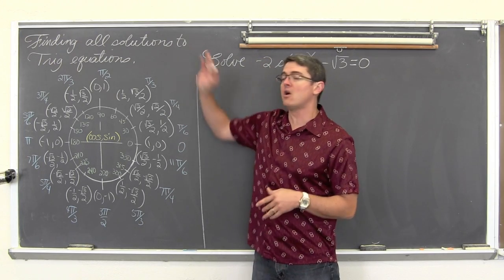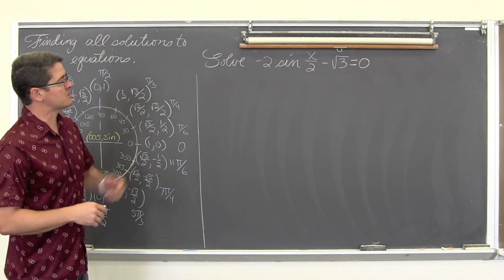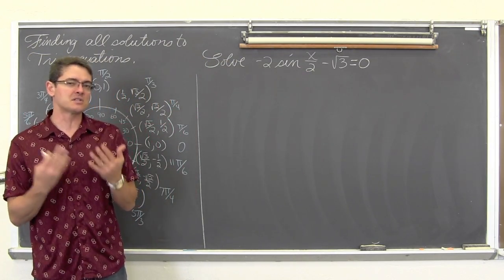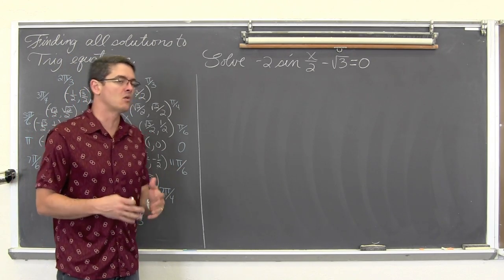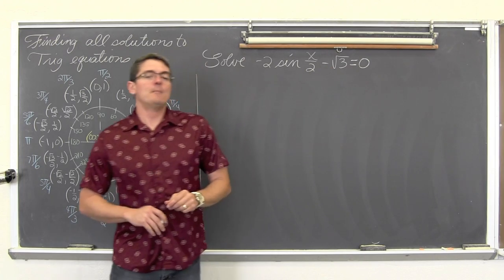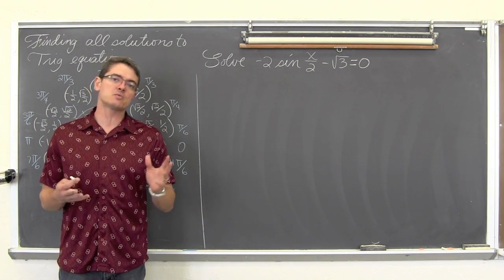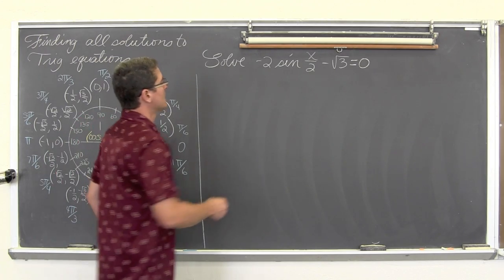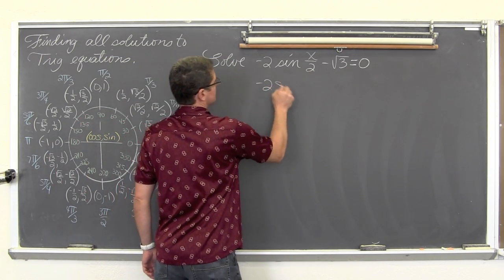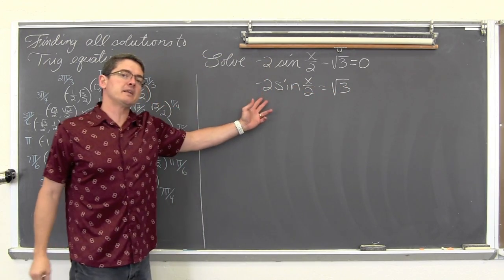Here we are going to be looking for all solutions. We are going to take a look at negative 2 sine of x over 2 — this is the multiple angle I am talking about, where it is not just a single sine of x, cosine of x, tangent of x, and so on. It is 1 half x; it has an adjustment on the angle size — minus square root of 3. We only have one term with the trig function in it, so we are going to isolate it. We are going to add the square root of 3 to both sides, then divide both sides by negative 2.